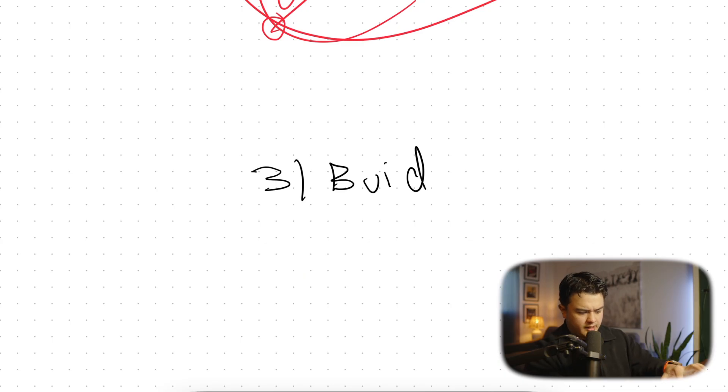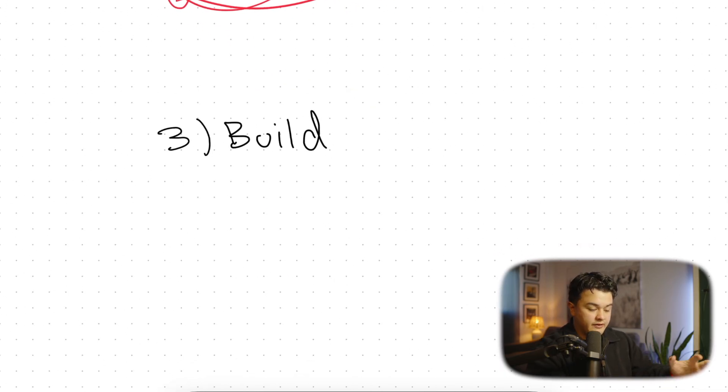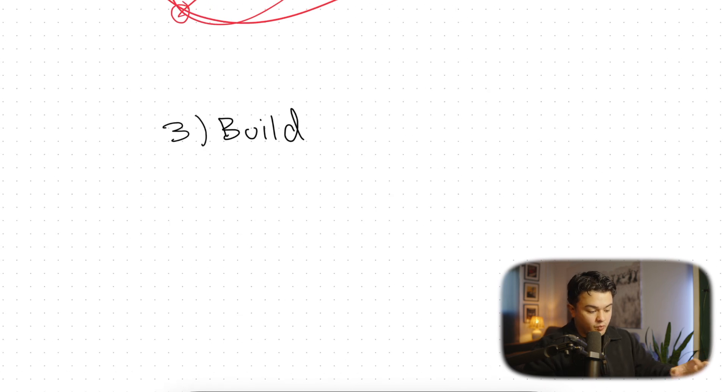Step number three: build. By this point, we have validated our idea. We have found a niche that we understand that has an issue that is willing to pay a lot of money to solve this problem. We have actually validated our idea by getting on the phone, by actually talking to these people, by diagnosing their problem. And now they have paid us a lot of money to actually build this out. So we know that this is something real and they're willing to pay for. We're going to build this out with Claude Code.